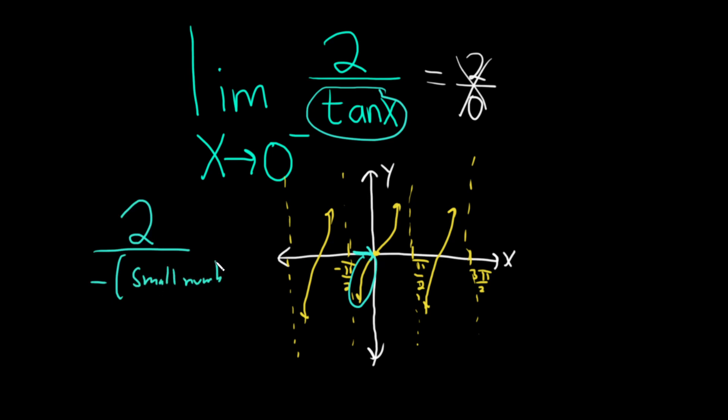And the closer you get to 0, the smaller this number gets. So you have 2 over a very small number, or a number that's getting infinitely small. So this fraction is getting infinitely big, but there's a negative sign here. So this limit is going to be equal to negative infinity.